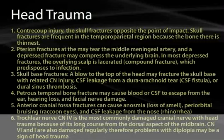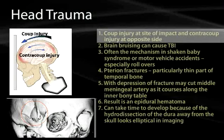The trochlear nerve is susceptible to injury because of its very long course from the posterior aspect of the brain. Cranial nerve 6 is also vulnerable because of problems with it running through the dura. Both will give you orbital effects, which we'll discuss later when we talk about the orbit.